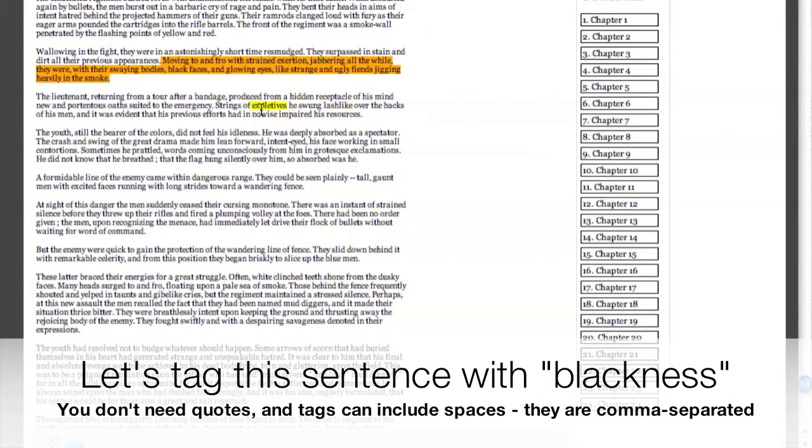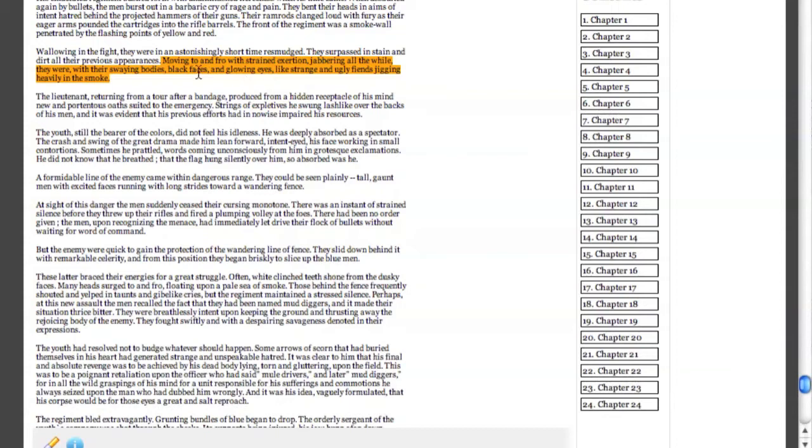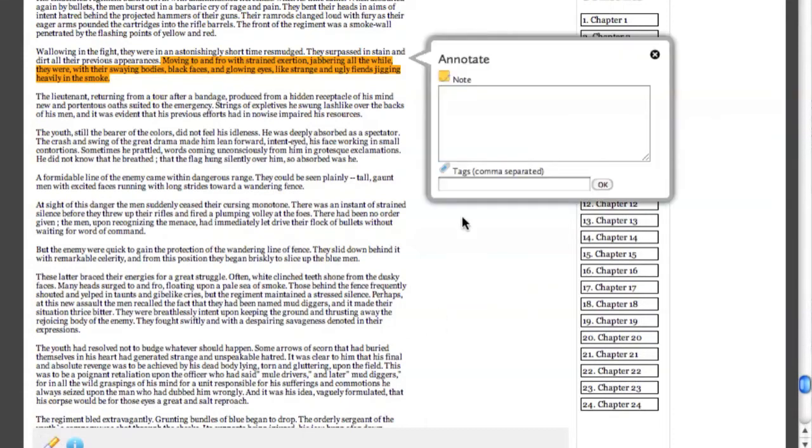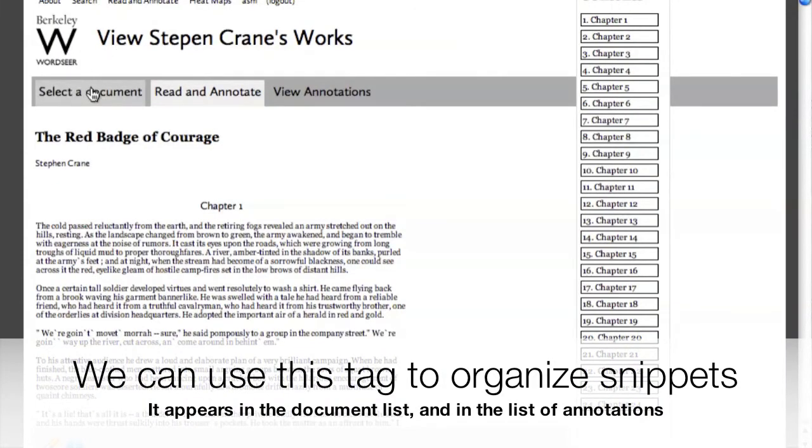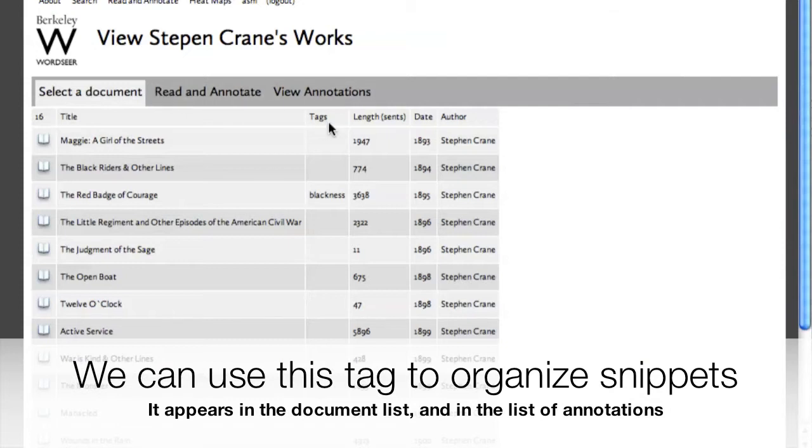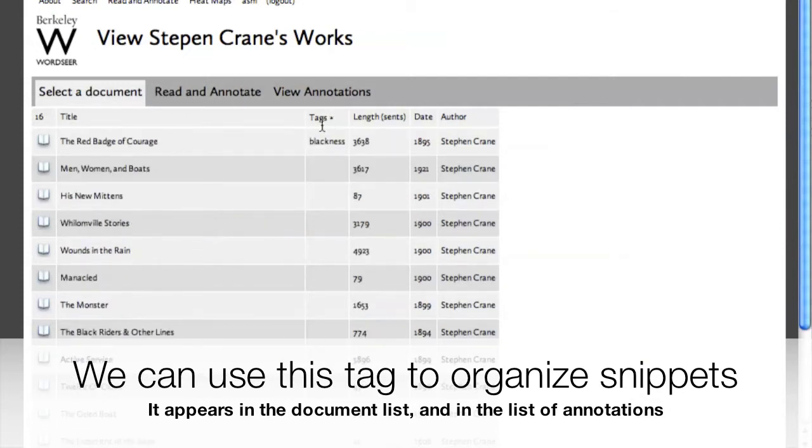But let's actually add an annotation. We'll take the same sentence, but this time we'll add the tag blackness. This tag now appears in the listing of documents. When we sort by tag, we now see that the tag blackness appears next to this document.